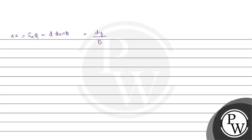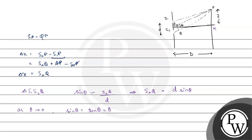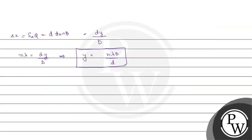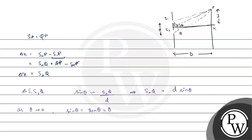For constructive interference, or a bright fringe, the path difference must equal n lambda. So n lambda equals small d times Y over capital D. From here, Y equals n lambda times capital D over small d. Y is the distance of the nth bright fringe from the central bright fringe. Now we need to find the fringe width.